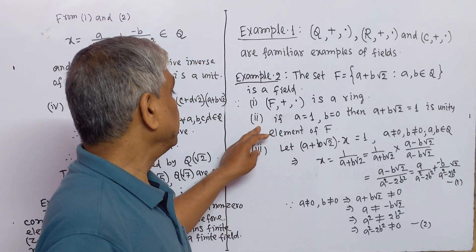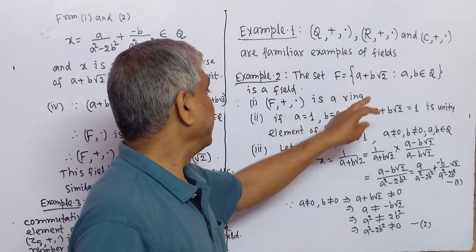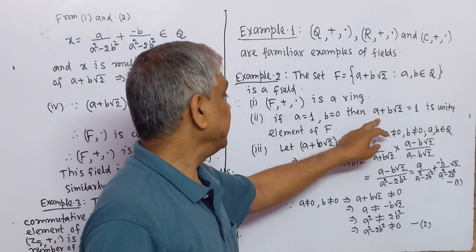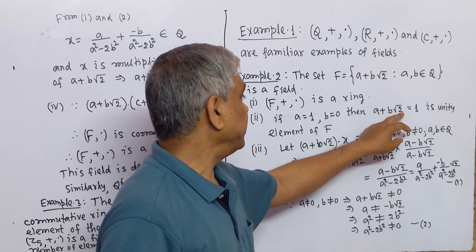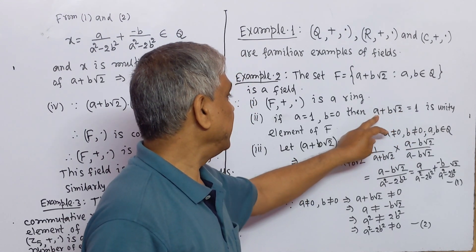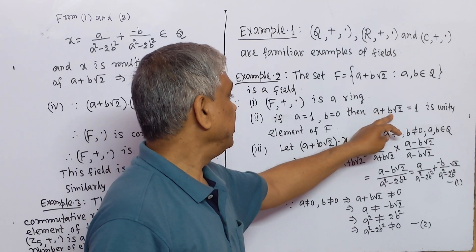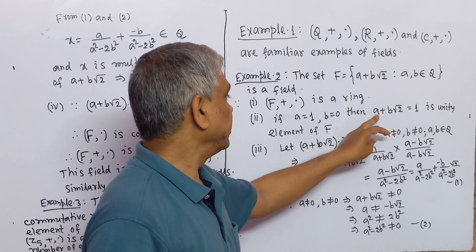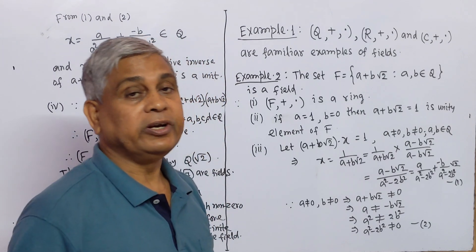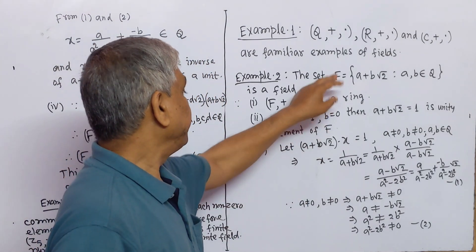Number 2: If a = 1 and b = 0, then a + b·√2 = 1. This is the unity element of F.